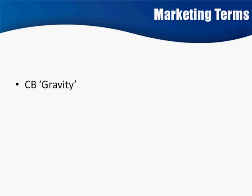All you have to do is out-market those people, and that's what I'm going to show you how to do. With ClickBank Gravity, you want to look for products that have a Gravity of 100 or greater and a commission of $30 or more. This is just my rule of thumb. You can make some money with a gravity of 20 or 30, but if the gravity is that low, there's not high demand.